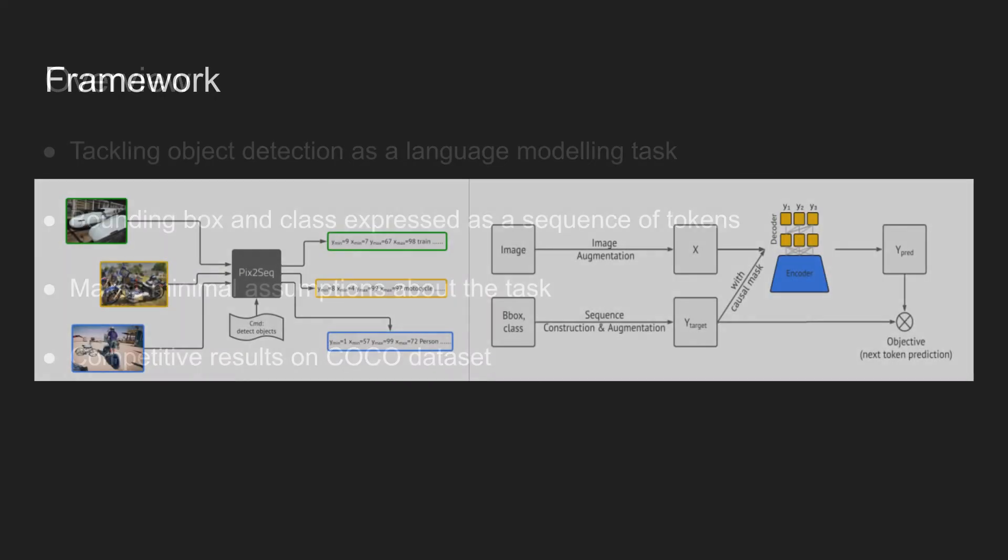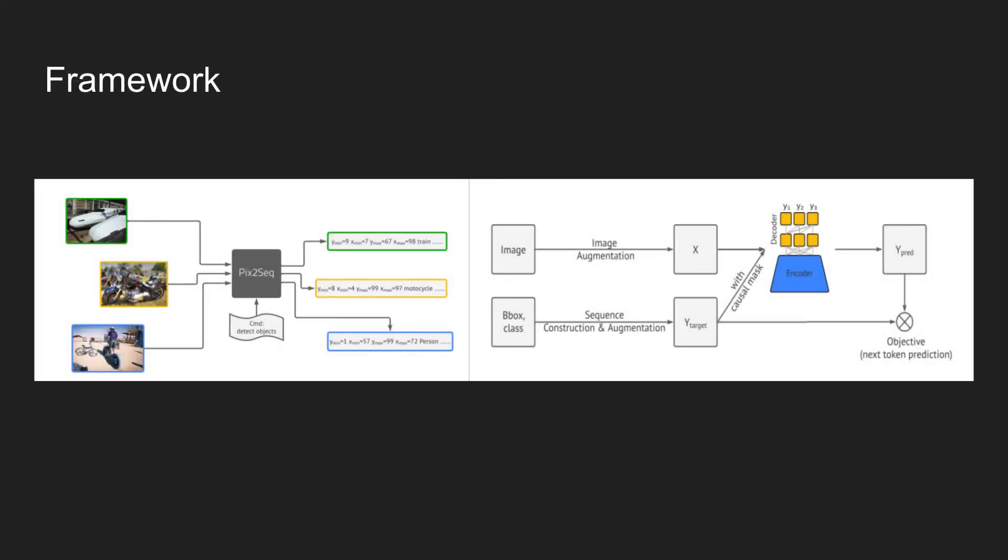The figure shows the proposed framework of Pixel to Sequence. The idea is simple. Given an image as input to the network, the Pixel to Sequence model generates a sequence of tokens. This token is composed of tokens representing the coordinate of a bounding box and a class.